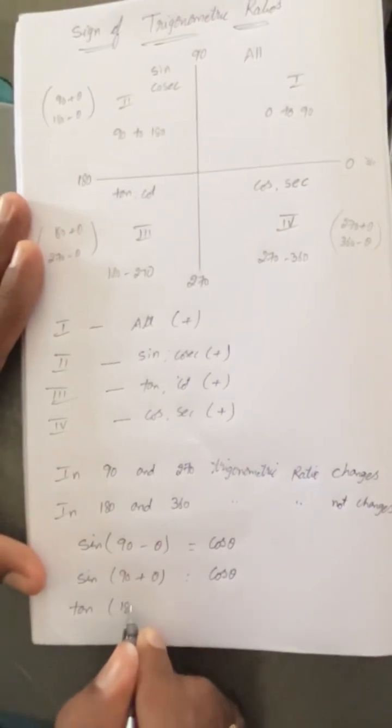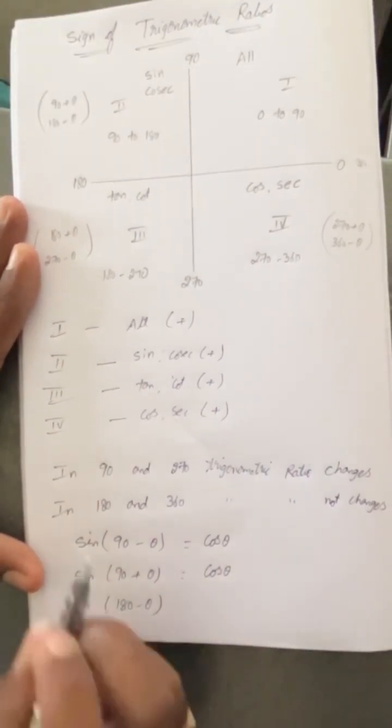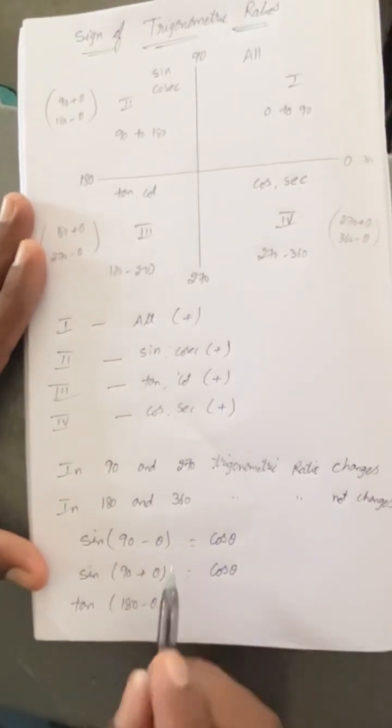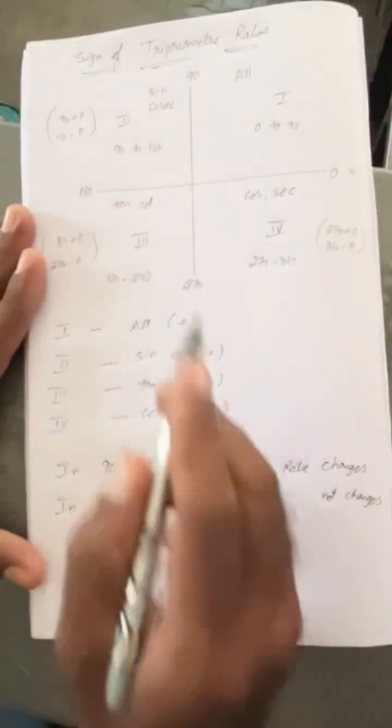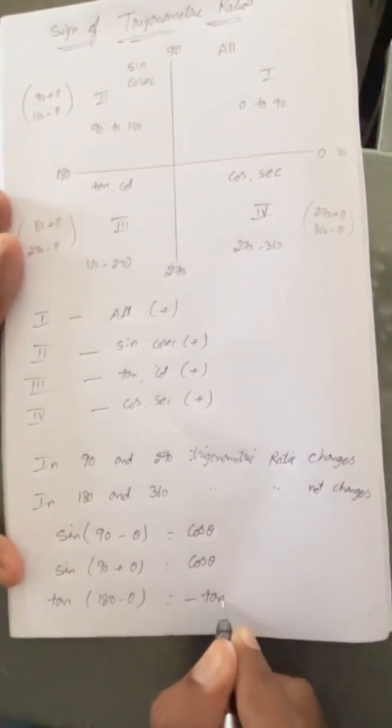Tan of 180 minus theta: 180 minus theta lies in second quadrant. In second quadrant tan is negative, so minus. In 180 tan remains the same as tan, so minus tan theta.